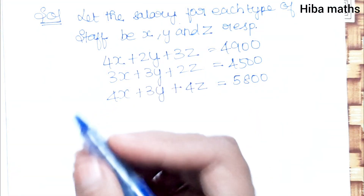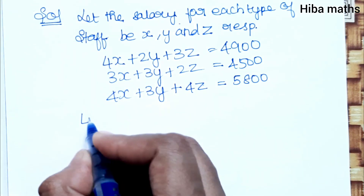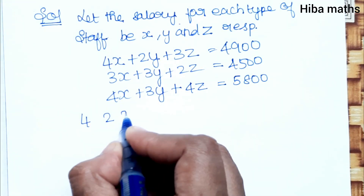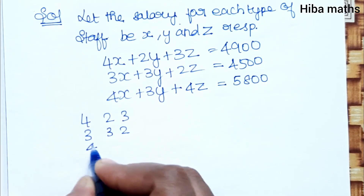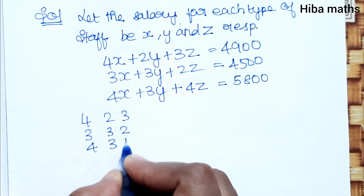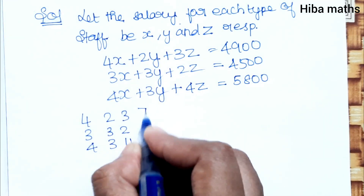So let's go to the question. Matrix A is: first row 4, 2, 3; second row 3, 3, 2; third row 4, 3, 4. AX = B, therefore X = A⁻¹B.